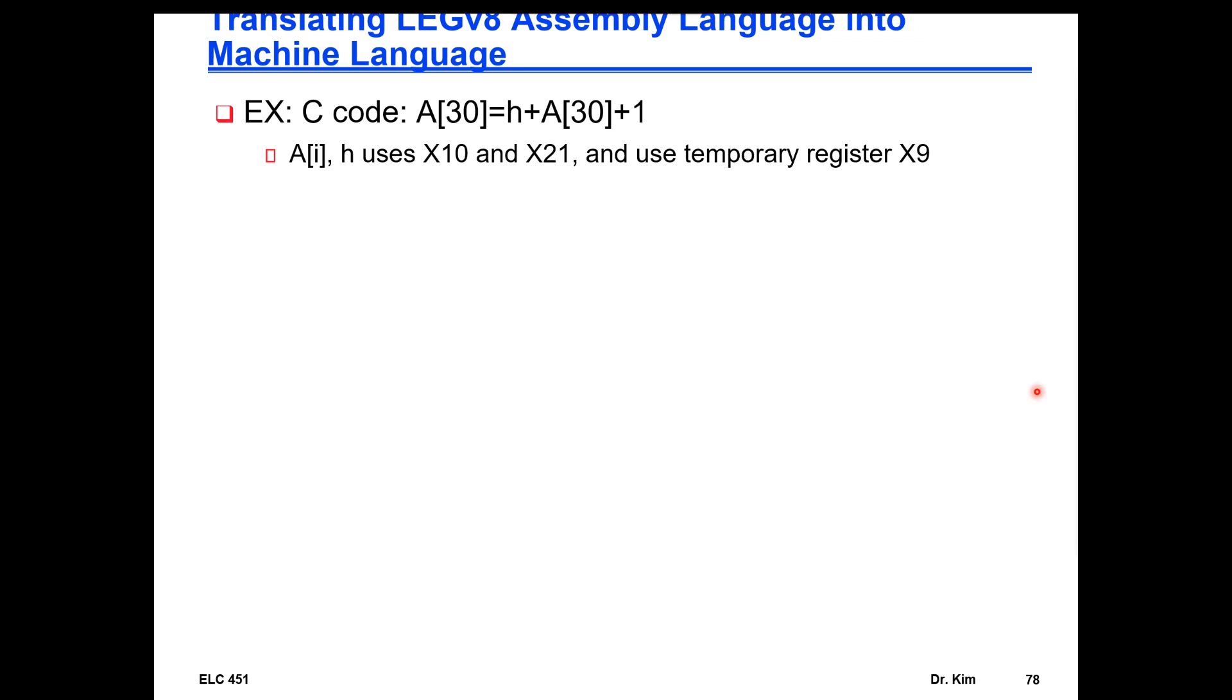So let's say that we have, I want the member 30 of array A to be equal to H, so some number, and that plus that member before being updated plus the number one. And remember that the I-type are very useful to implement operations with small constants, relatively small constants.